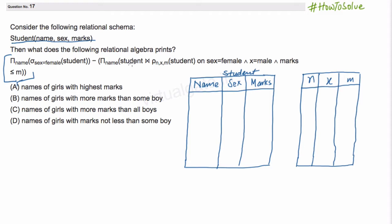If you see here, there is a join between the student schema and another schema which we will discuss on the basis of these conditions. This is the rename operator. What it is doing is, on the same student schema, it is renaming the attributes. So this 'name' will be renamed as 'n', 'sex' will be renamed as 'x', and 'marks' will be renamed as 'm'.